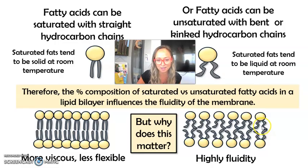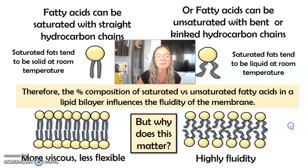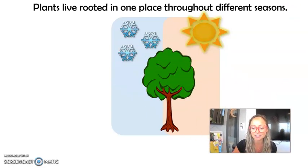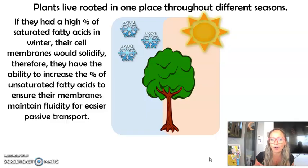Why does this matter? If we think about humans, we are endotherms and we thermoregulate, maintaining a constant body temperature at 98.6 degrees, so our cell membranes are in a pretty stable temperature environment. However, that is not the case when you are a plant rooted in one spot that has to live in the same area through different seasons. If a plant had cell membranes with a high percent composition of saturated fatty acids in wintertime, that would be like putting lard or bacon grease in the freezer — it's only going to get harder, which would make diffusion much more difficult.